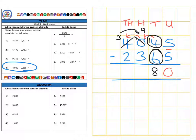Then we have the 900 subtract the 300 for 600. And then finally, 3,000 subtract 2,000 for 1,000, for a final answer of 1,680.